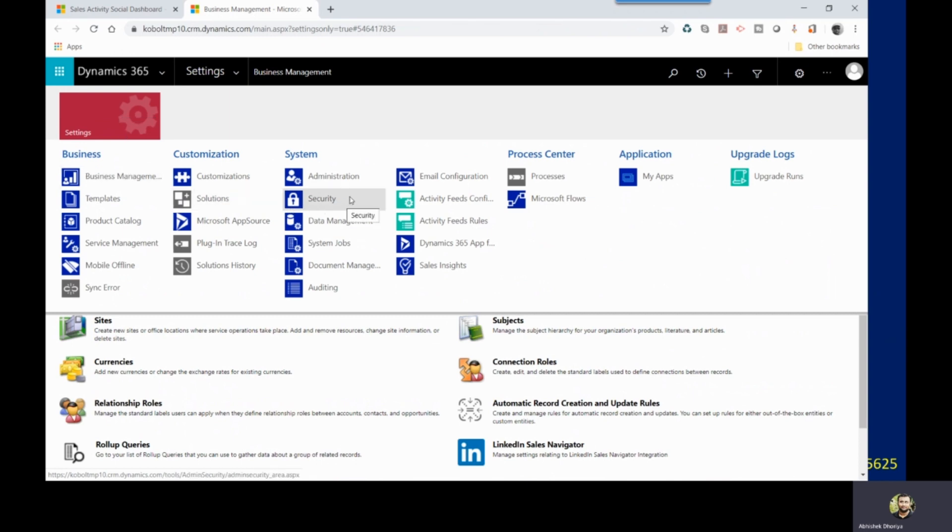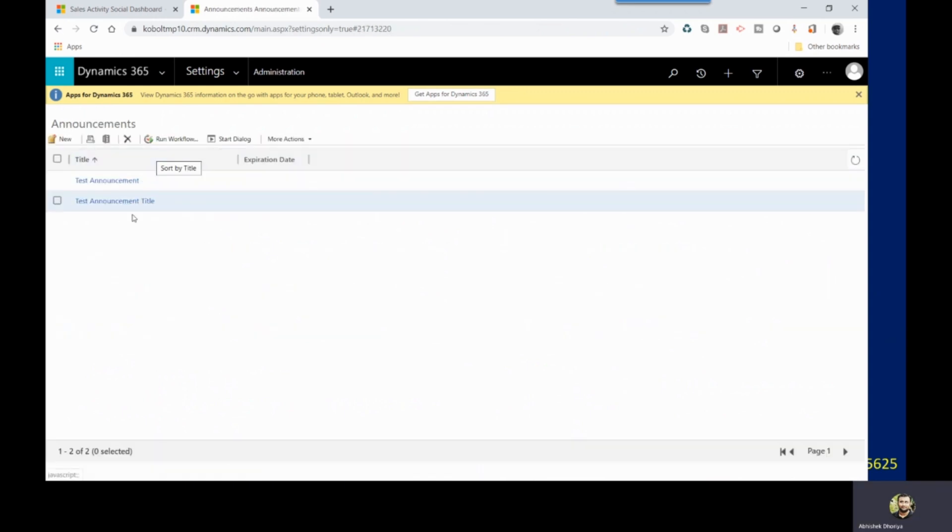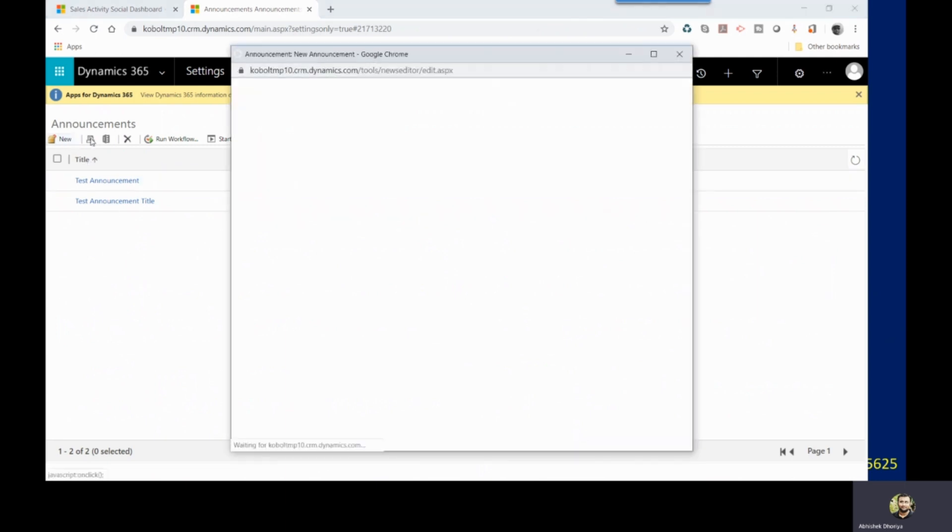And inside the settings you will find administration settings. And the moment you land on the administration setting, the very first feature you will see here is announcement. So here you can see the list of different announcements that you have in your environment and you can create new by clicking this new button.